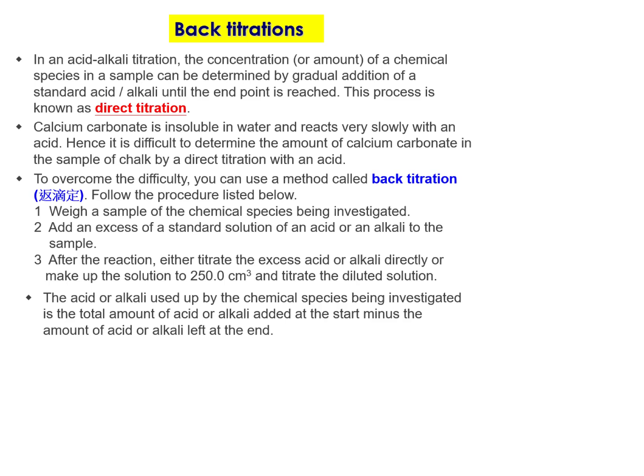In this video I will talk about back titration. Before talking about back titration, I would like to remind you what is the meaning of titration. When we learn titration, we need to find out the concentration of a chemical species in a sample. We can use titration to find the end point and then to find the titre so that we can find the concentration of a species. That is called direct titration.